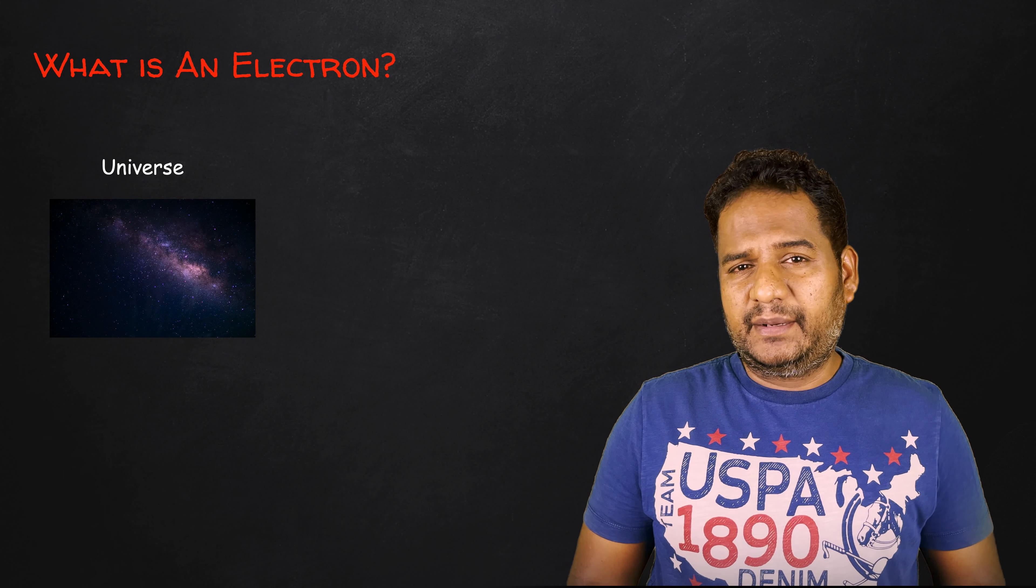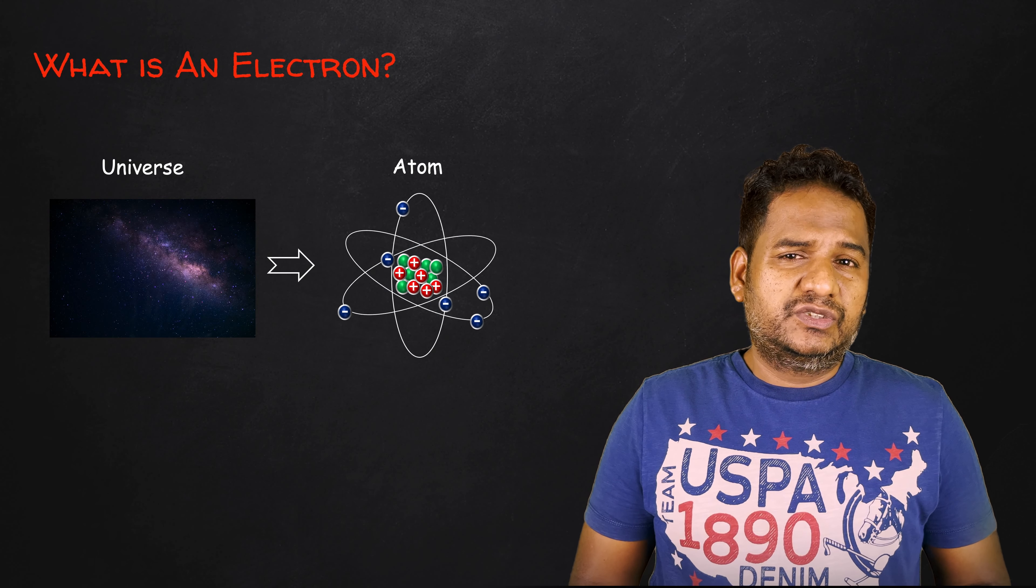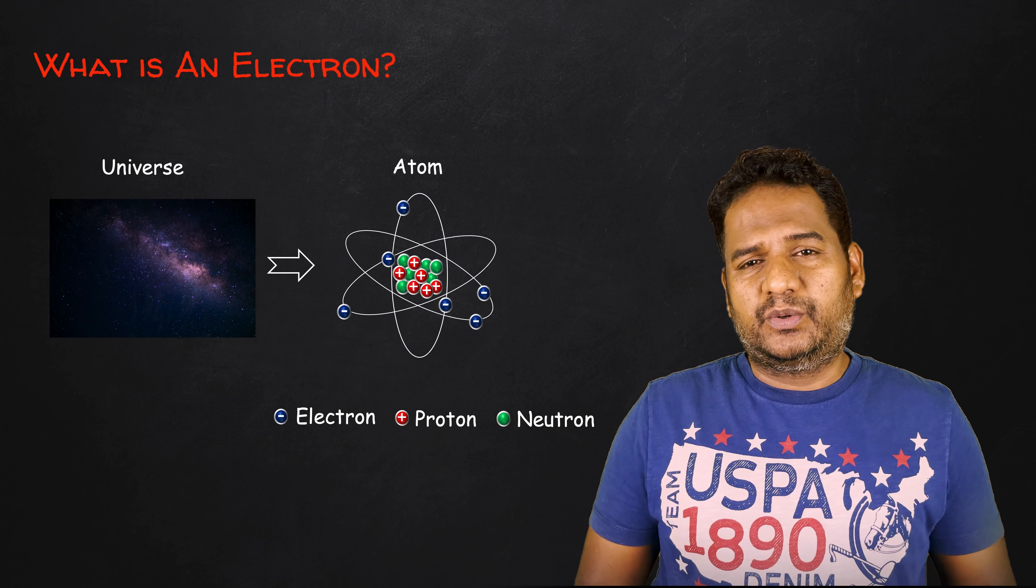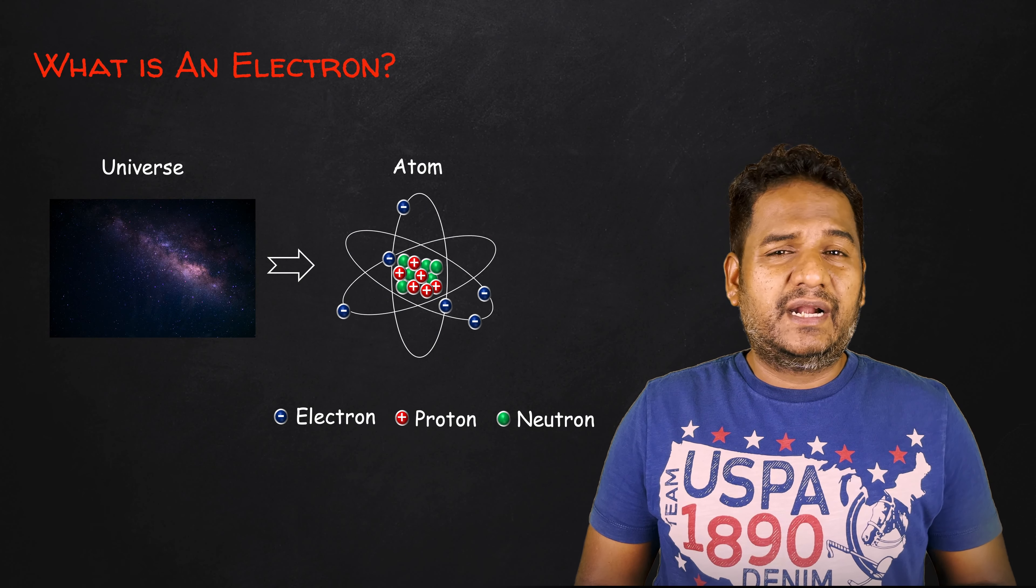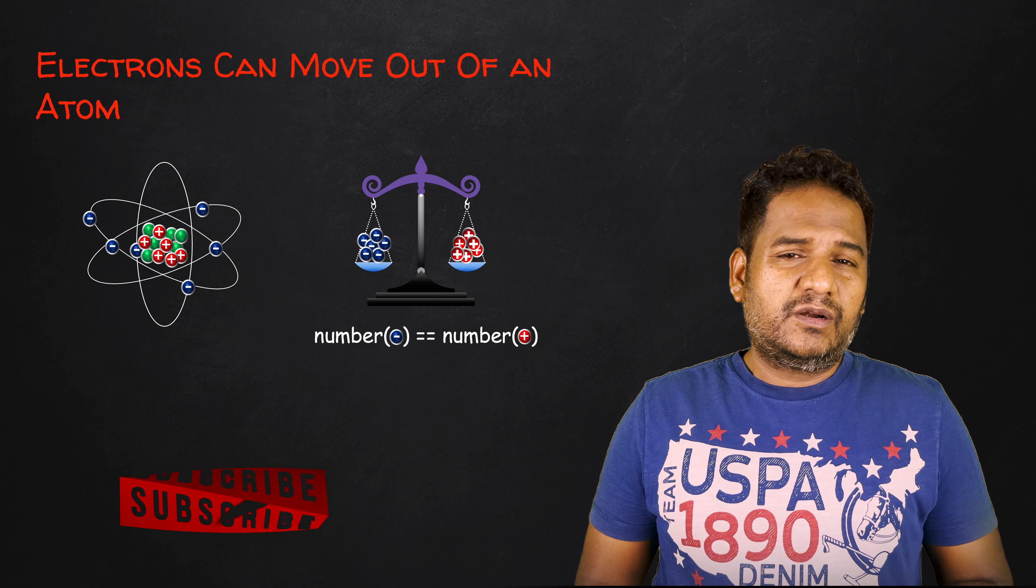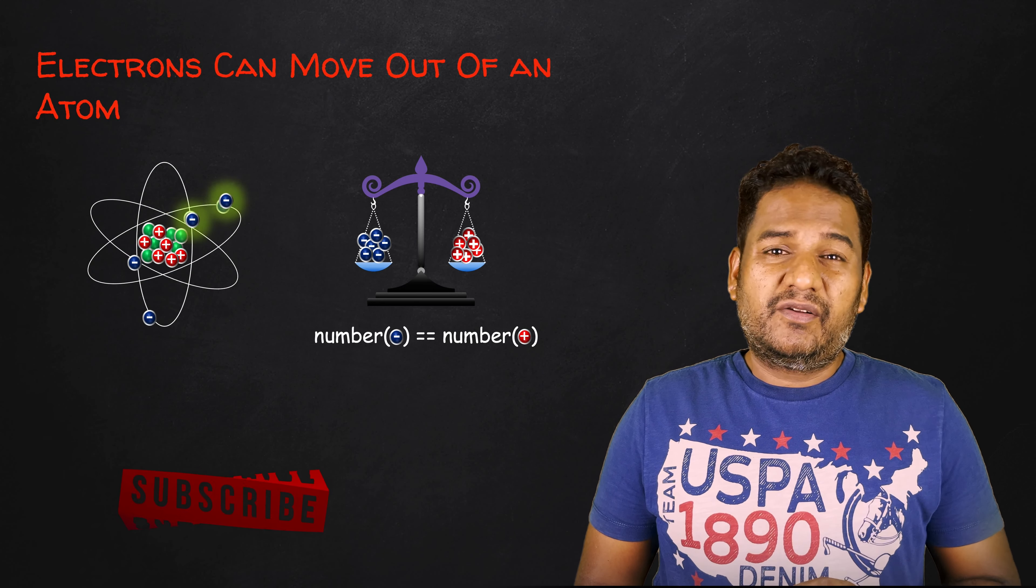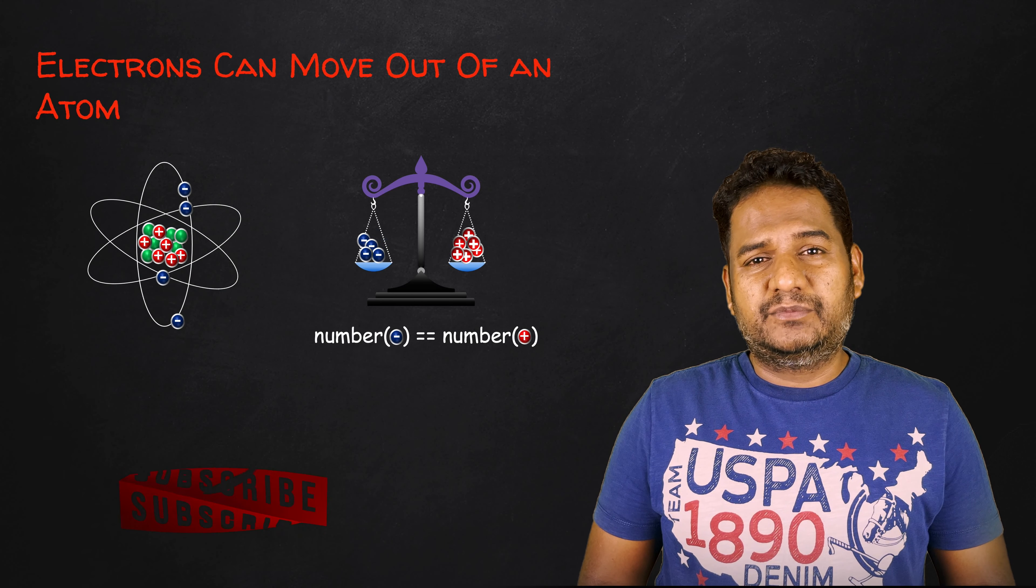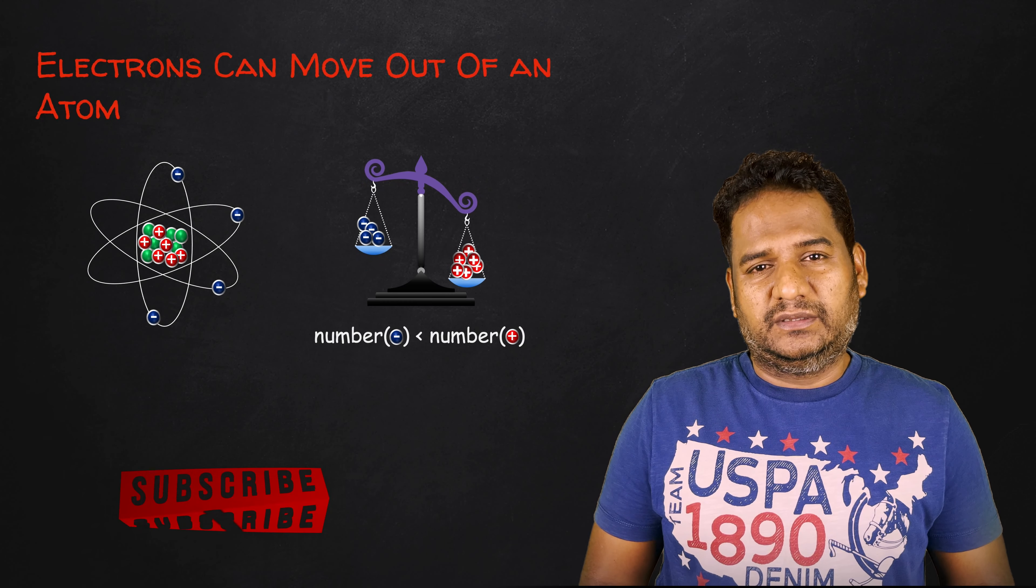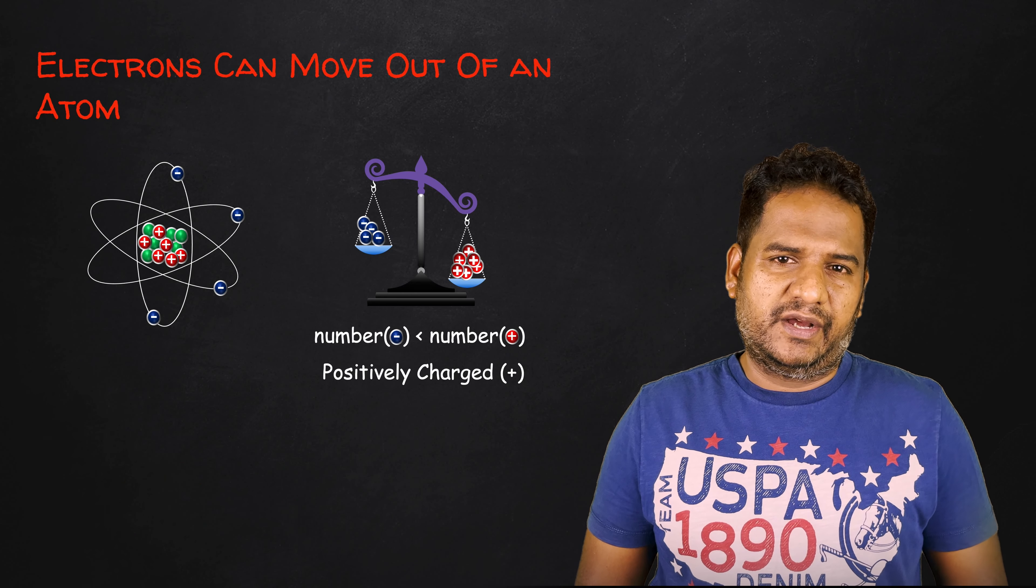All matter in this universe is made up of atoms. Even we are made up of atoms. An atom consists of electrons, protons, and neutrons. By default, an atom contains an equal number of electrons and protons. Note that the electrons present in an atom can move out of it. When it does, the number of electrons in that atom becomes lower than the number of protons. After losing a few electrons, the atom becomes a positively charged ion.